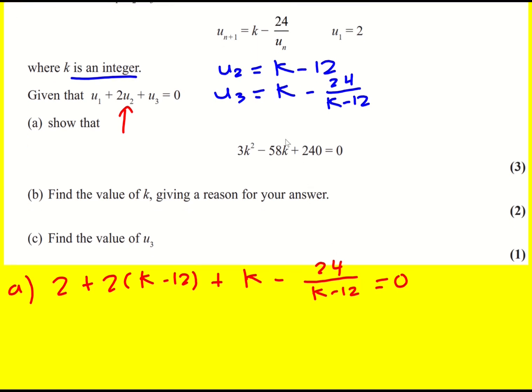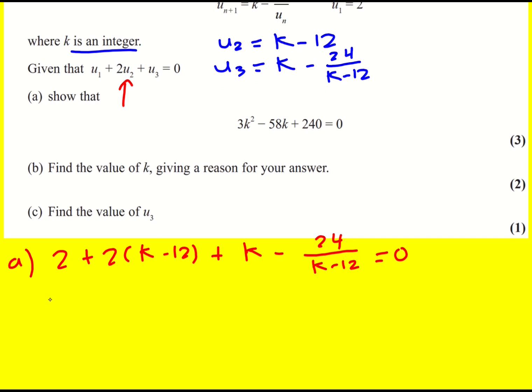And we've got to rearrange that into the form shown. So let's expand the bracket. Then simplify, 3k minus 22 minus 24 over k minus 12 equals 0.